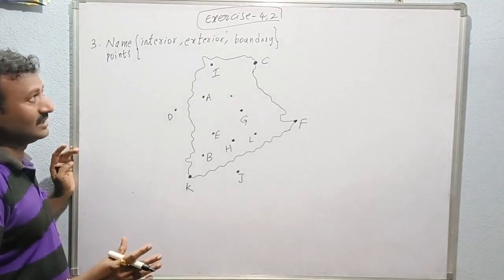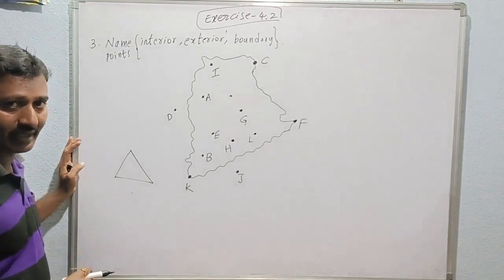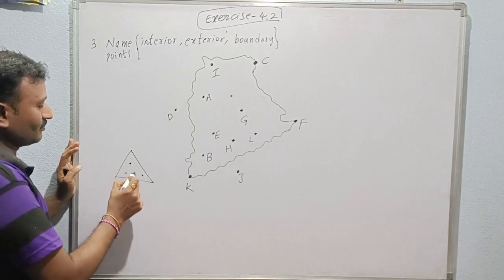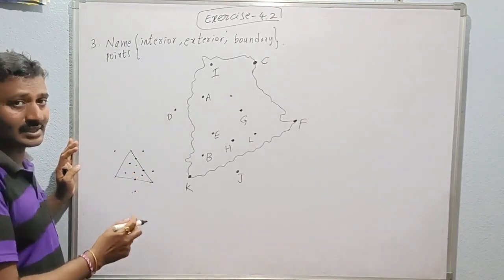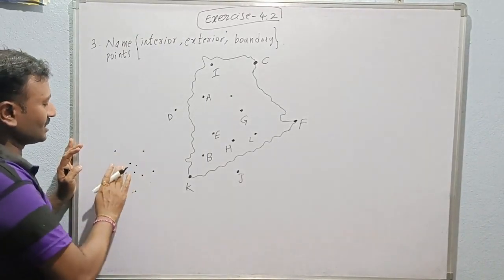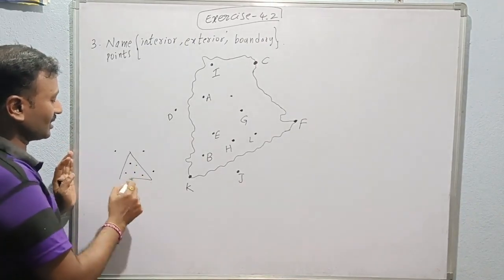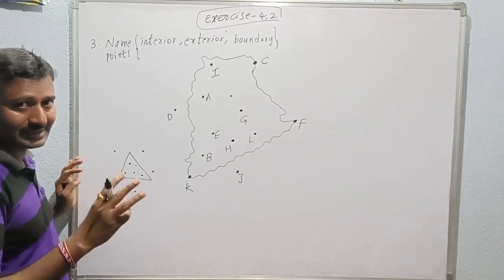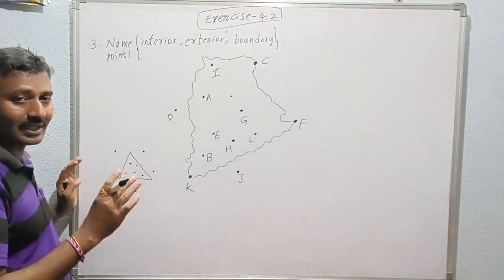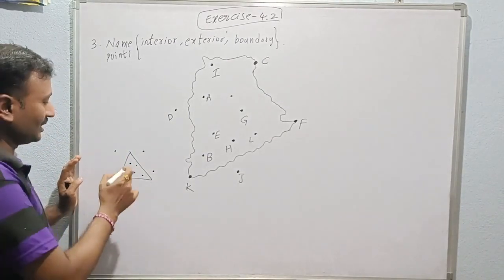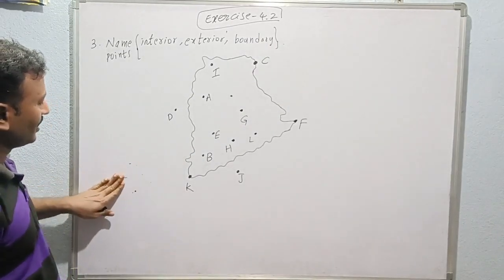Now let us discuss what is interior, what is exterior, and what is boundary. Let us take one triangle or any two-dimensional figure. When a triangle is drawn, it divides the plane into three categories: exterior means outside, interior means inside, and boundary means on the particular figure — on that line we are drawing. These are called boundary, interior, and exterior points.